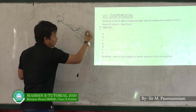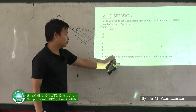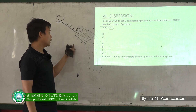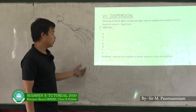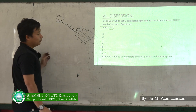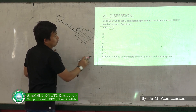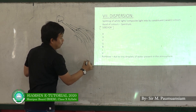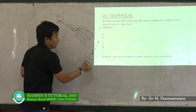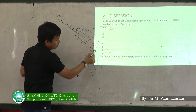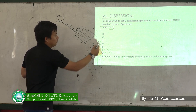A rainbow is formed because tiny droplets of water are present in the atmosphere. Light passes through these droplets and forms rainbow colors. The rainbow colors follow the order VIBGYOR — Violet on the inner side and Red on the outer side.